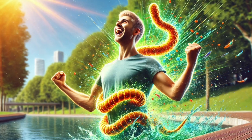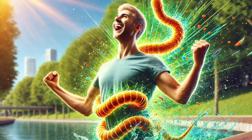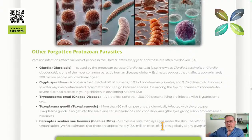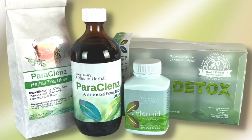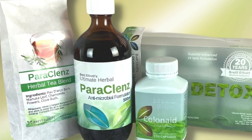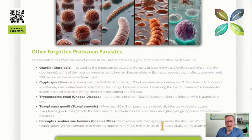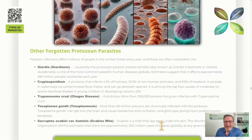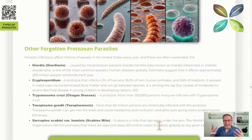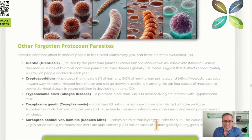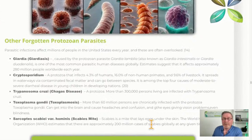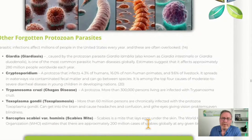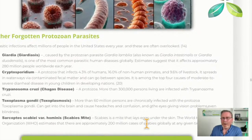Parasites are often disregarded until you see them face to face, so doing a parasite cleanse once a year is a really good idea. Our herbal detox program includes a parasite cleanse, and we also offer a deeper parasite cleanse program. Next week we'll focus on the foods and herbs that kill parasites and how they work. The herbal detox program runs over six weeks; for severe infestation, we recommend repeating it six weeks later — two full deep cleanses back to back — to address the incubation cycle of the parasites.